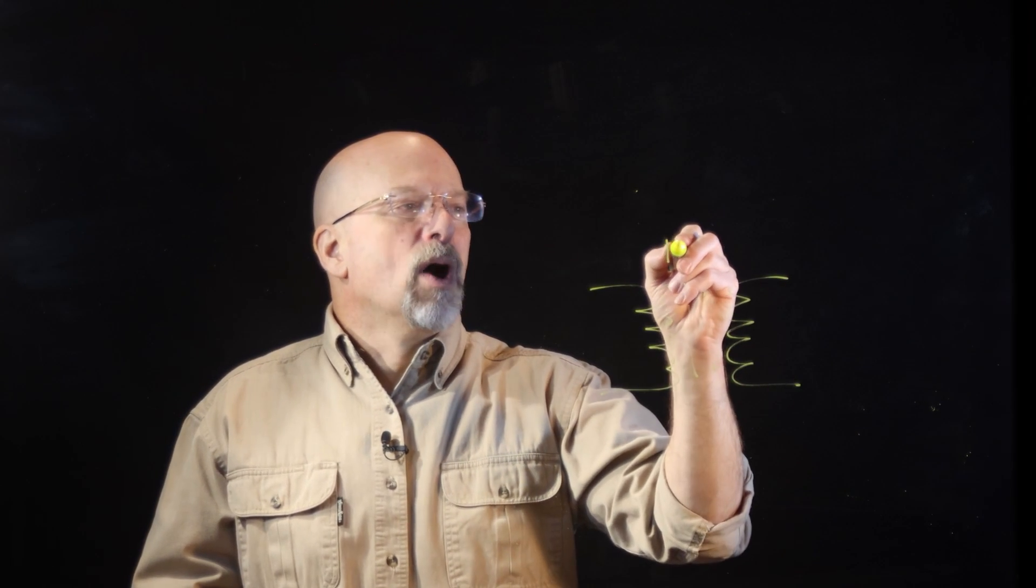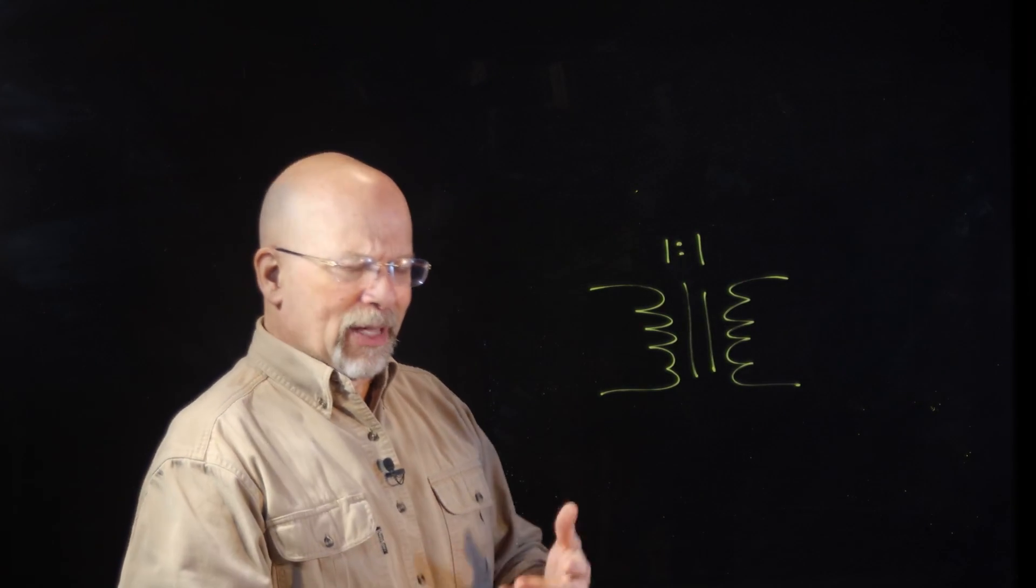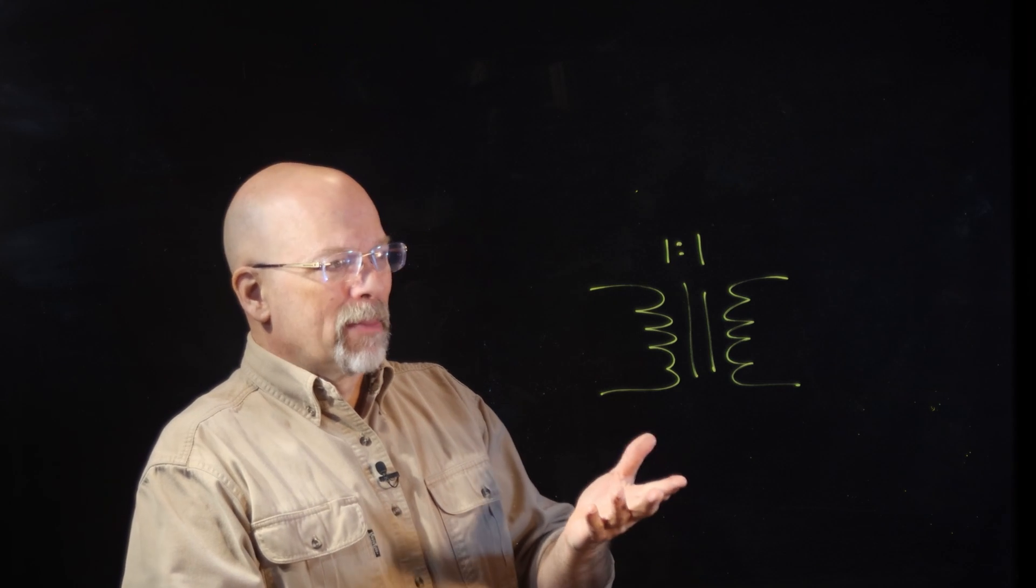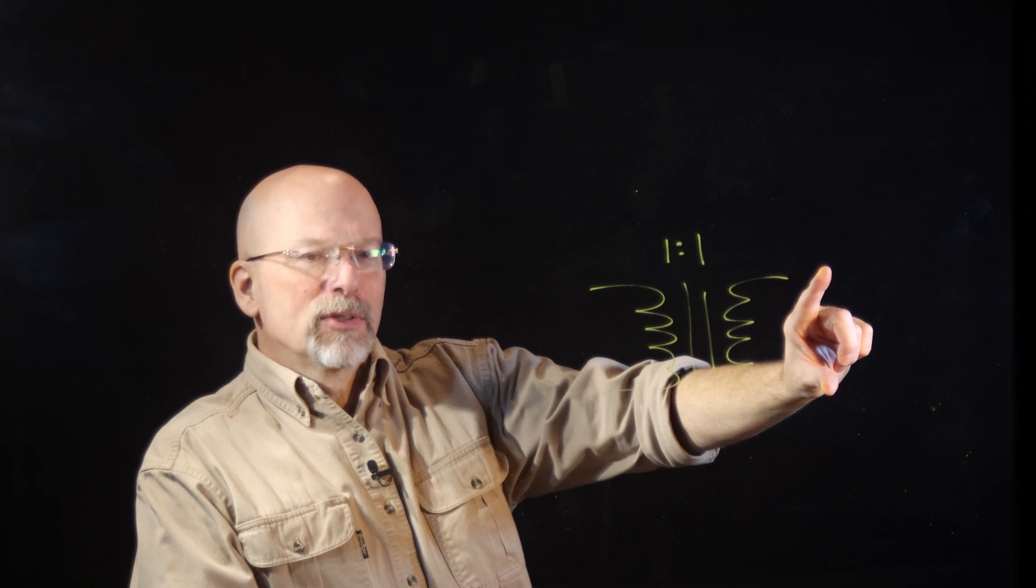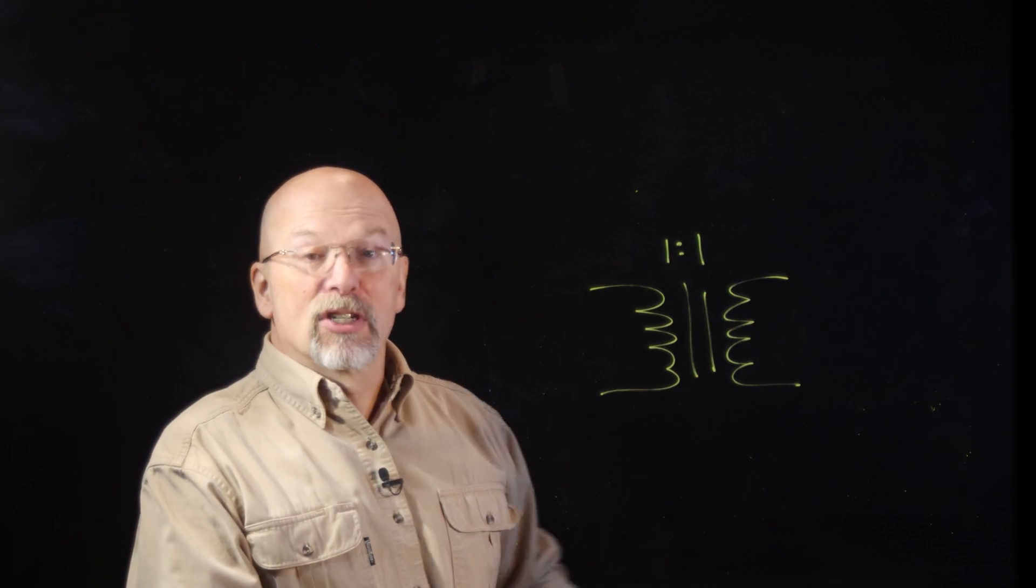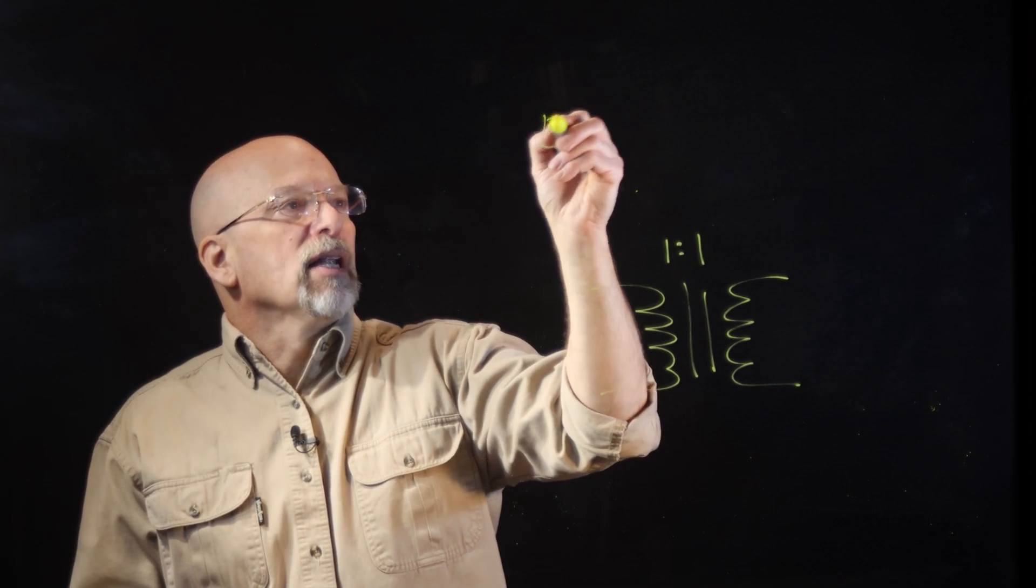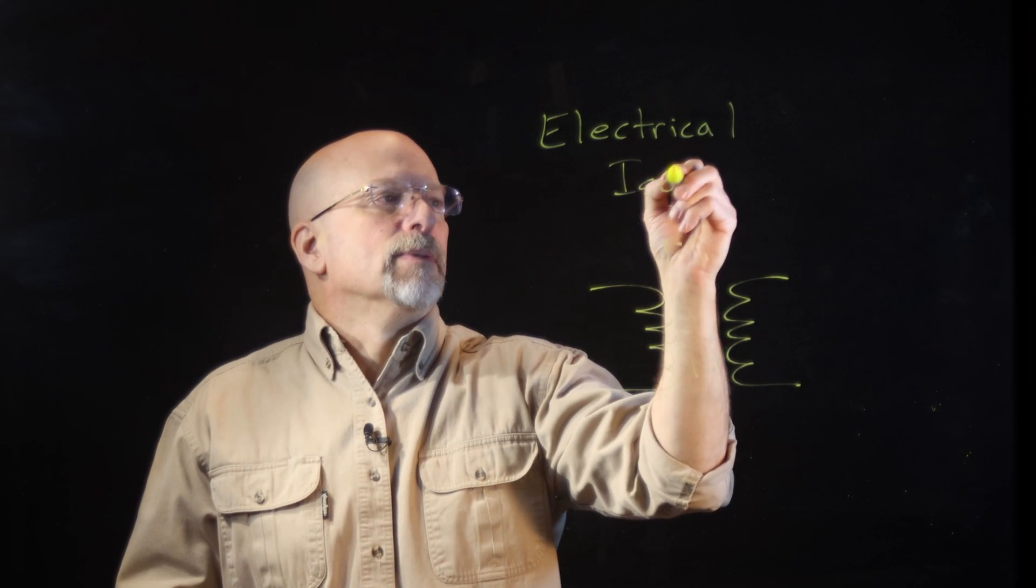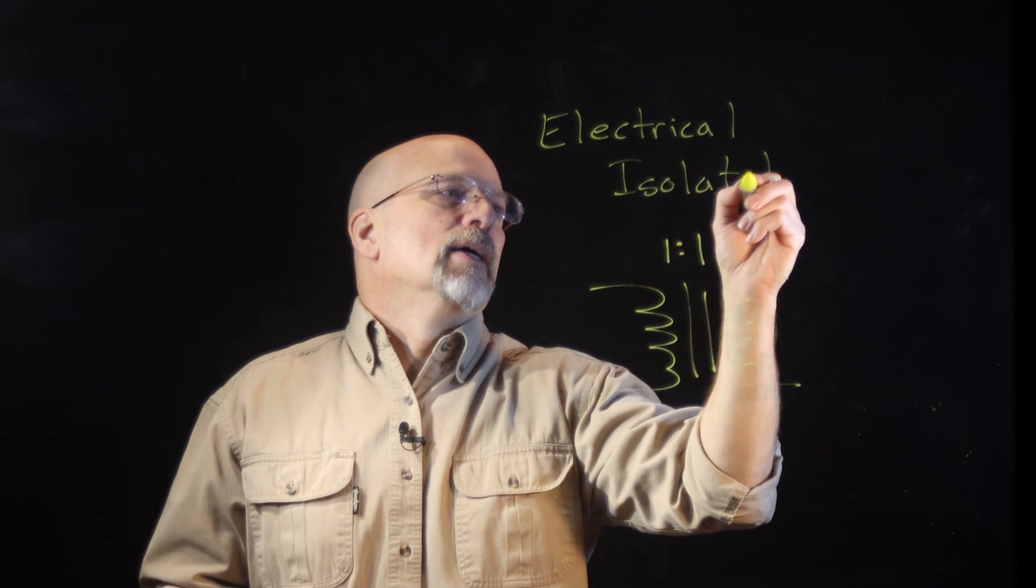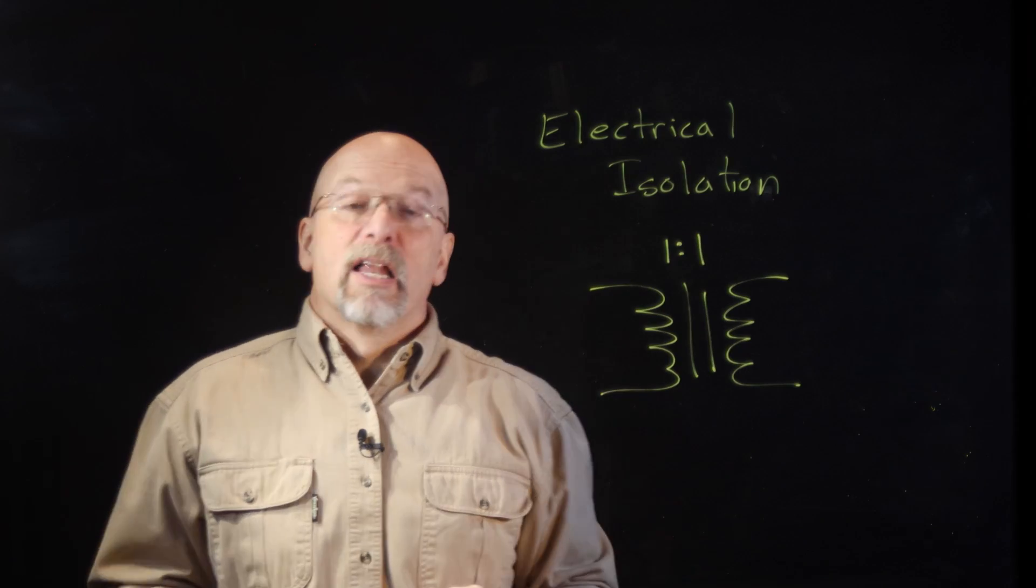For example, if I have a transformer that has a one-to-one turns ratio, well that doesn't seem very nice. I mean, that doesn't seem very useful at all. I mean, all I'm doing is I'm taking one voltage and I'm creating the exact same voltage on the other side. Why don't I make just a direct connection? Well, what this does for us is it creates electrical isolation.